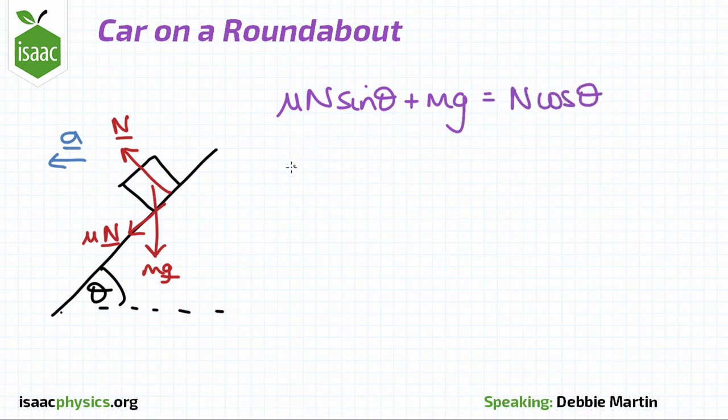Using Newton's second law for the radial direction, mu n cos theta plus n sin theta equals mv squared over r.